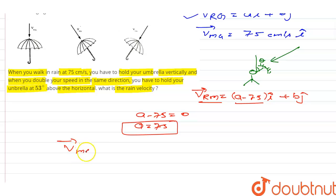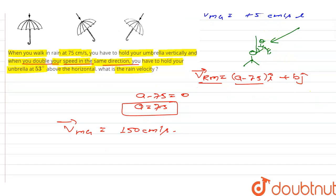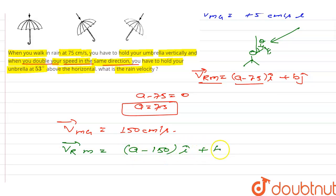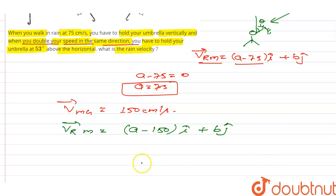Now the velocity of man with respect to ground becomes 150 centimeters per second, because the question says he doubles his speed in the same direction and double of 75 is 150. So the velocity of rain with respect to man becomes (a − 150)·i-cap plus b·j-cap, which is (75 − 150)·i-cap plus b·j-cap, giving −75·i-cap plus b·j-cap.